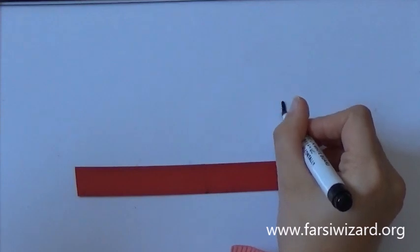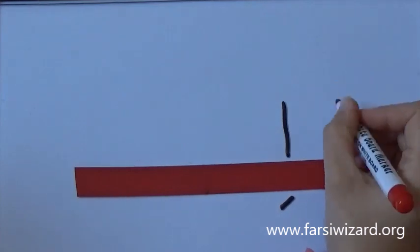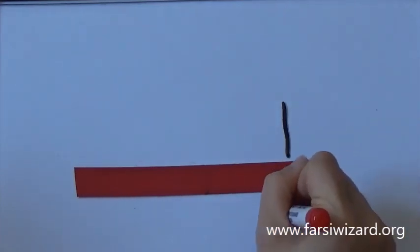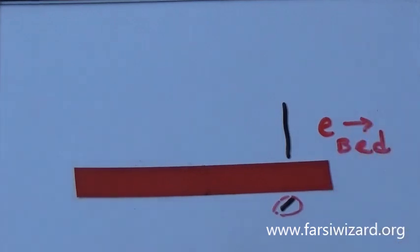So let's go to the next possibility. The same letter Aleph. Now the marker is below the line. In this case, the sound will be different, will be E. So this sound is very similar to the sound E in the word bed in English. It's a short vowel.